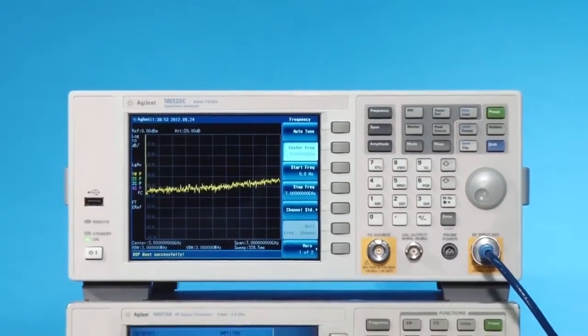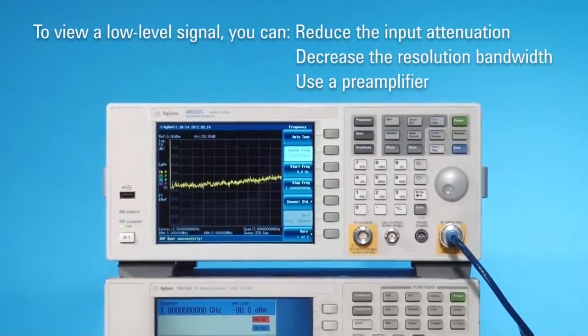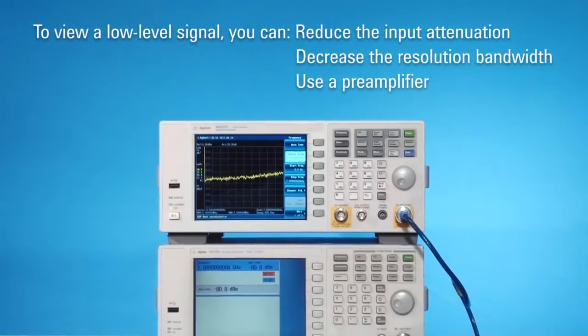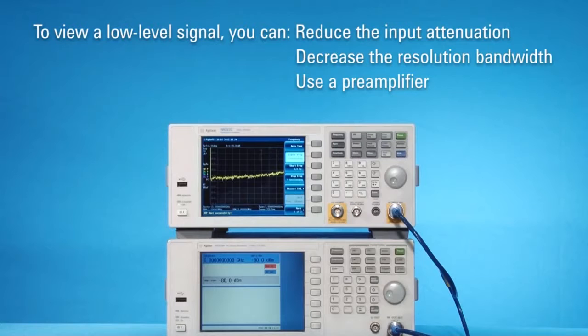And reveal the low-level signal: 1. Reduce input attenuation, 2. Decrease the resolution bandwidth, 3. Use a pre-amplifier.